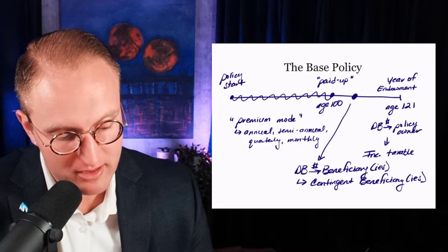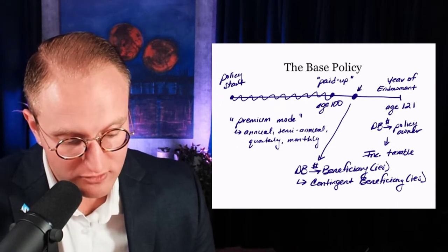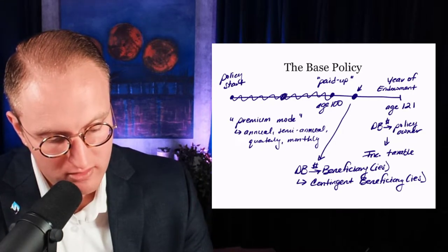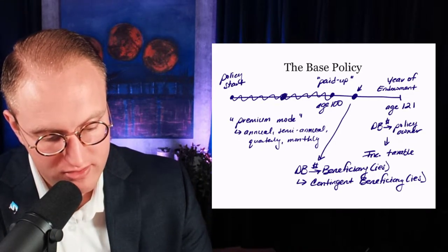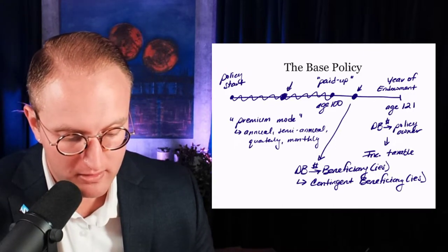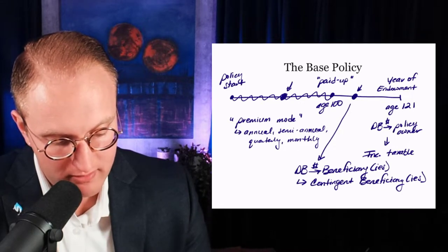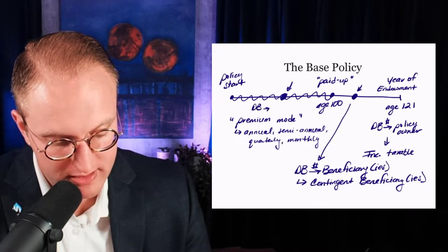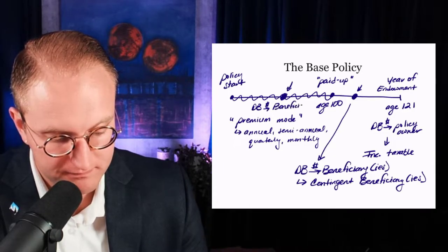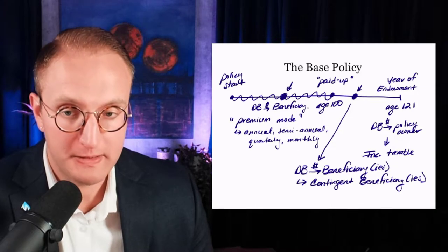The death of the insured doesn't have to happen after age 100. It could happen prior to the year in which the policy is paid up, and if that were to happen, the death benefit would just get paid to the beneficiary at that time.